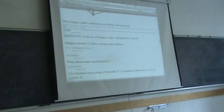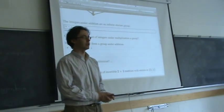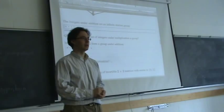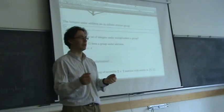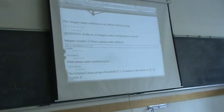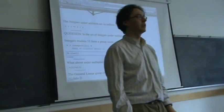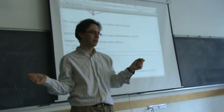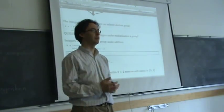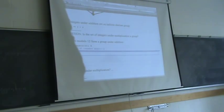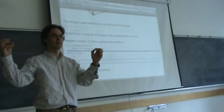Another example of a group is the set of integers under addition. It satisfies all the axioms of a group and it's an abelian group — you can add integers in either order. It's an infinite group, so you can't represent the integers under addition as permutations of some finite set. Another example is the integers modulo 12 under addition. Whenever you say it's 7 o'clock and wonder what time it'll be in eight hours, you're doing arithmetic in the group of integers modulo 12 — you get 3 o'clock.